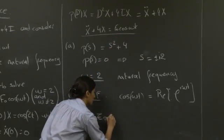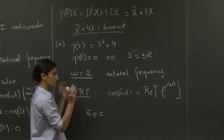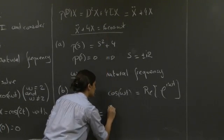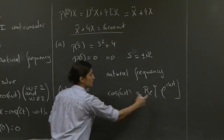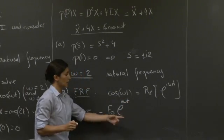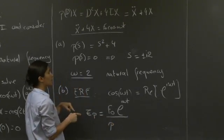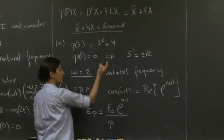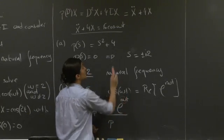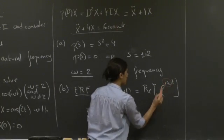So we can rewrite this whole equation as x dot dot plus 4x equals f0 exponential i omega t, and we would get then a particular solution if I ignore any particular value of omega at this point, which would have the form of the amplitude that we have on the right-hand side, f0 exponential i omega t, which is basically our forcing, over the characteristic polynomial of the equation, so s squared plus 4, evaluated at the frequency here that would appear in the forcing, in the exponential form, so with the i omega t.